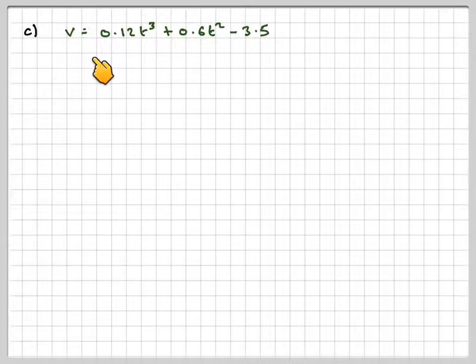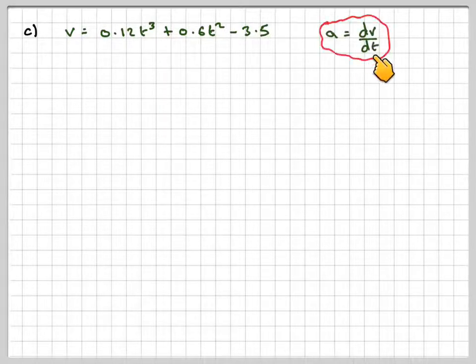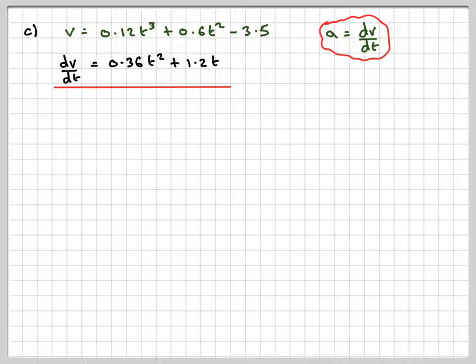So for the last part, we need to find the acceleration. We've got v equals 0.12t cubed plus 0.6t squared minus 3.5. The acceleration is the derivative of the velocity, so dv by dt will be 3 times 0.12, which is 0.36t squared, plus 2 times 0.6, which is 1.2t, and that is it. That's the answer for part c.